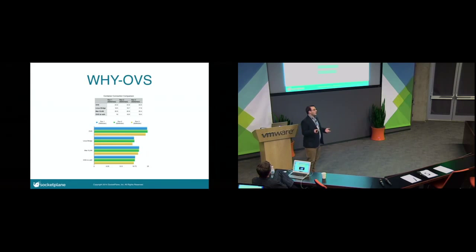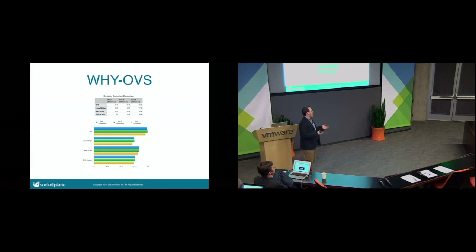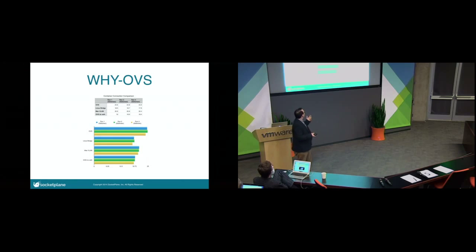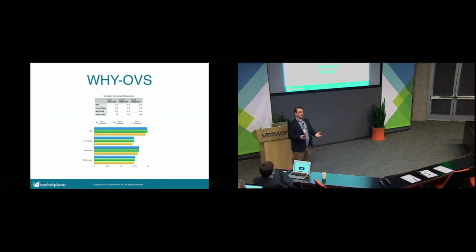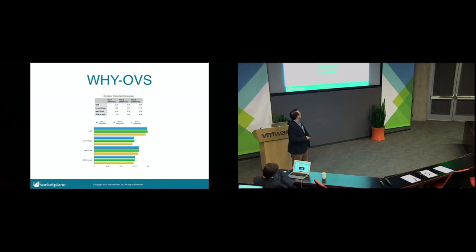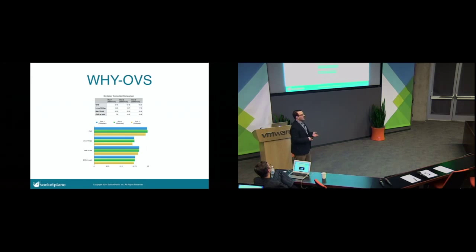Just a little performance comparison — this is up on GitHub if you want to pull it. We looked at Linux Bridge, Open vSwitch using veth pairs, MacVLAN and MacVLAN-based bridging, and Open vSwitch with internal ports. Right at the top is Open vSwitch with internal ports — by far the most performant solution without acceleration for doing connections within the same Docker host. Anything using veth pairs is pretty awful, and MacVLAN was kind of between the two.